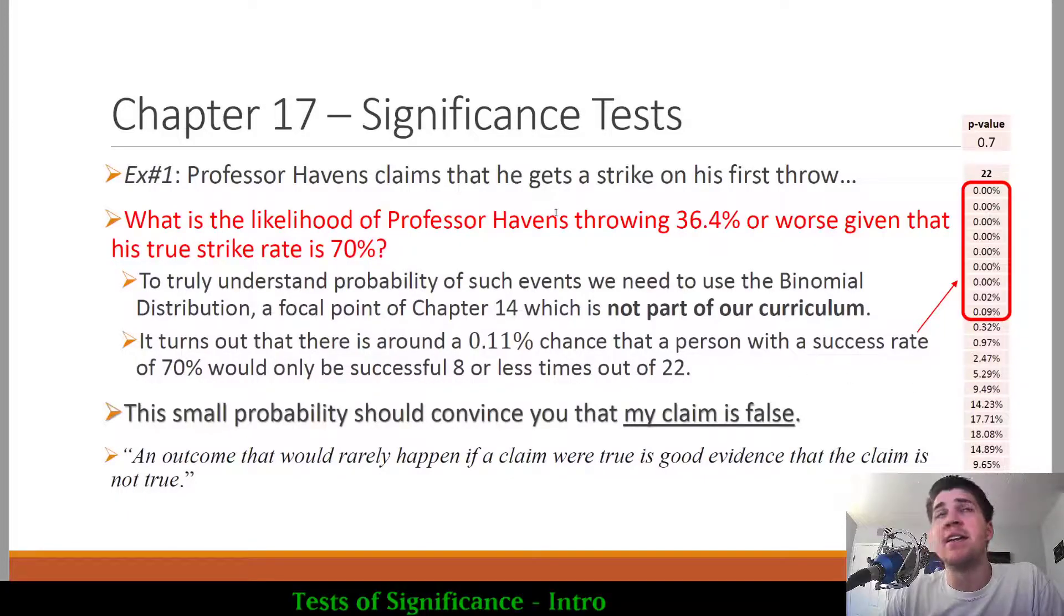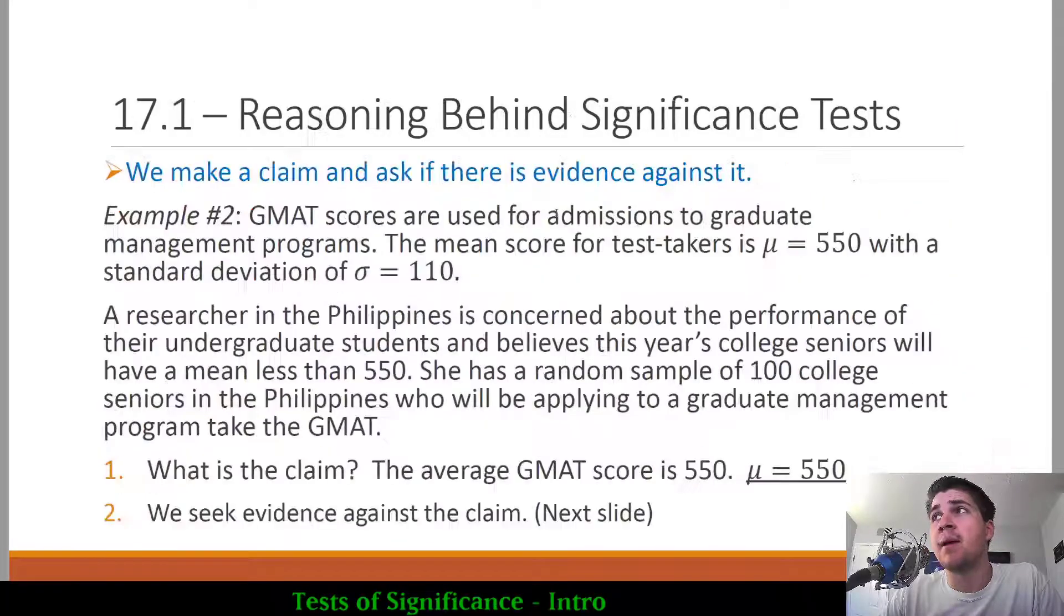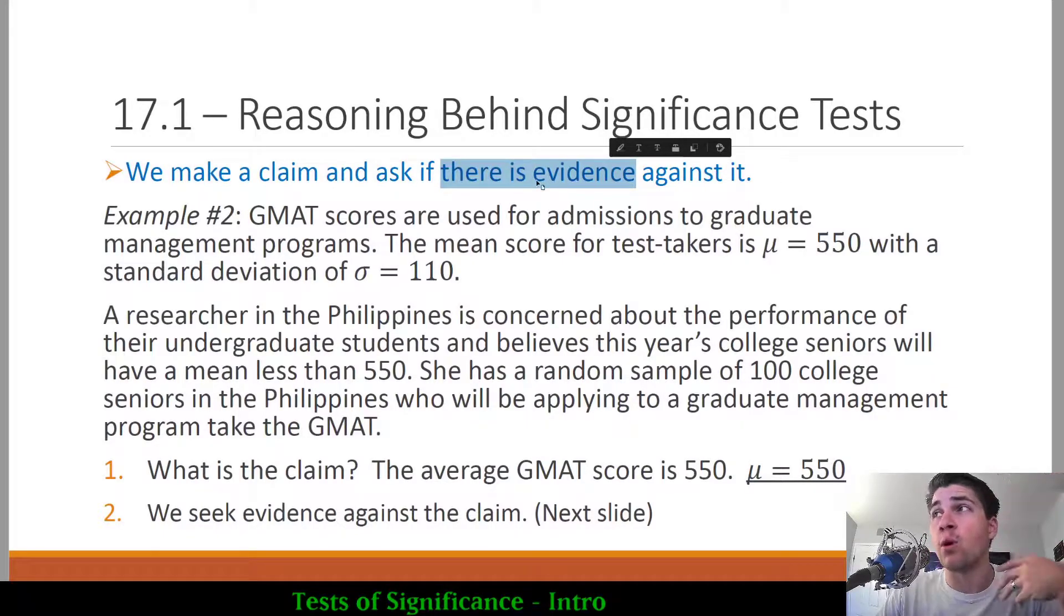Let's look at another example of a test of significance and jump into example number two. Keep in mind that when we're working on a significance test, we're always trying to examine the claim about a population parameter, always about mu, and the goal is to assess to see if there is evidence that it is not, or lower than, or higher than that value.